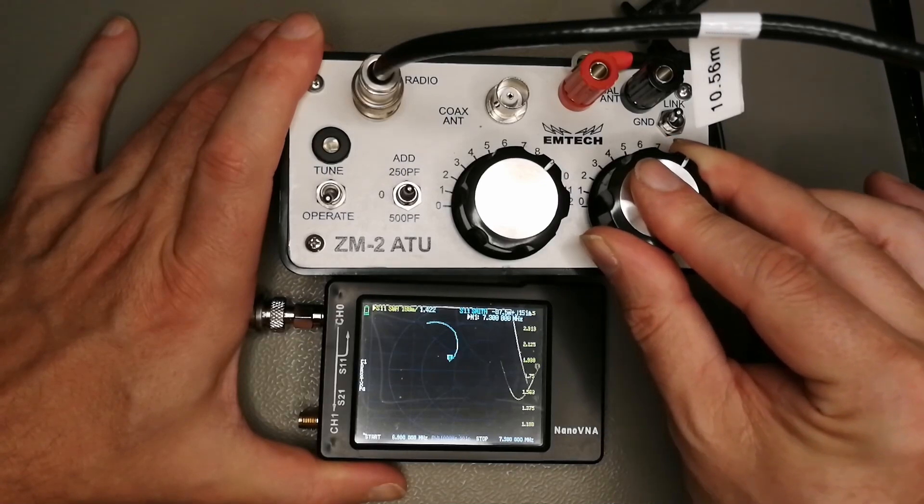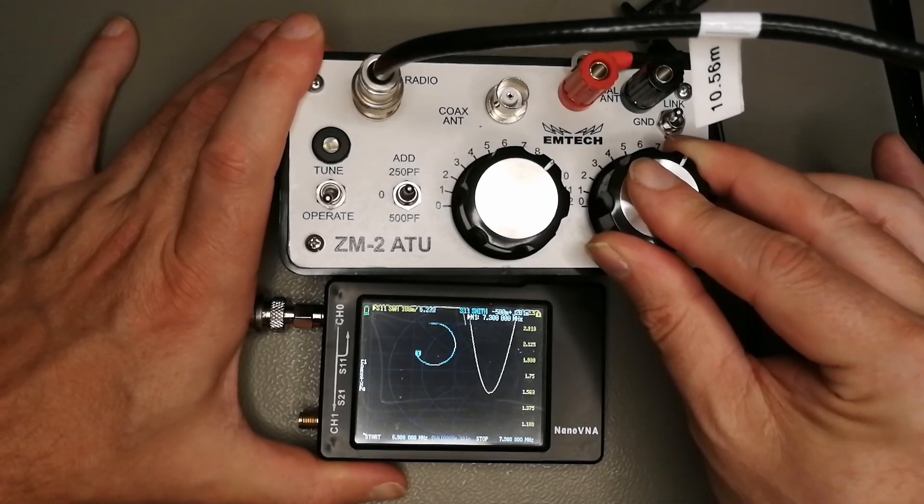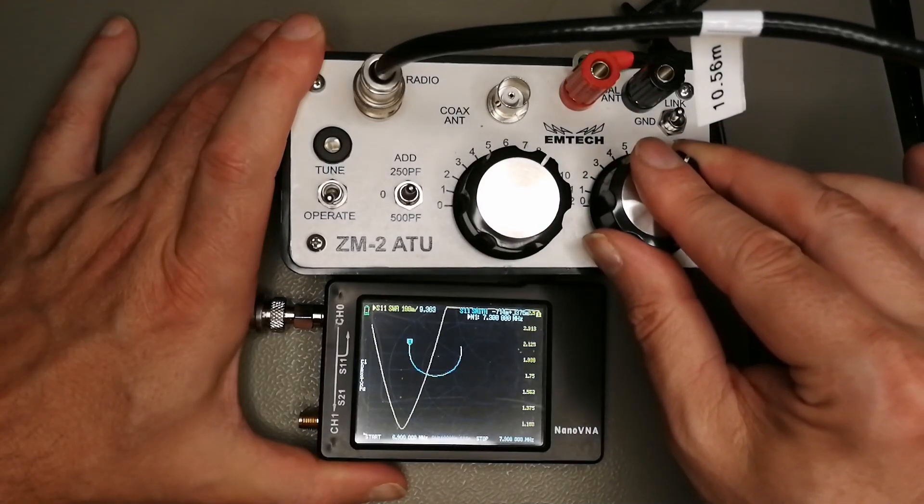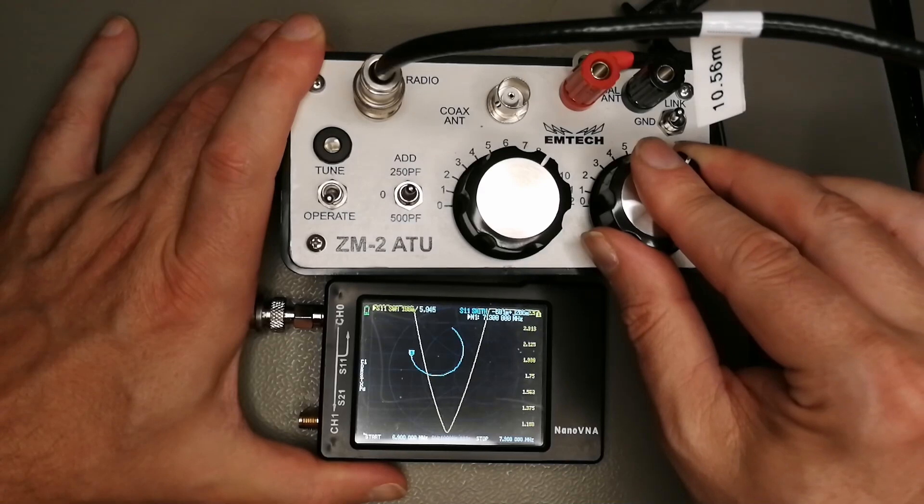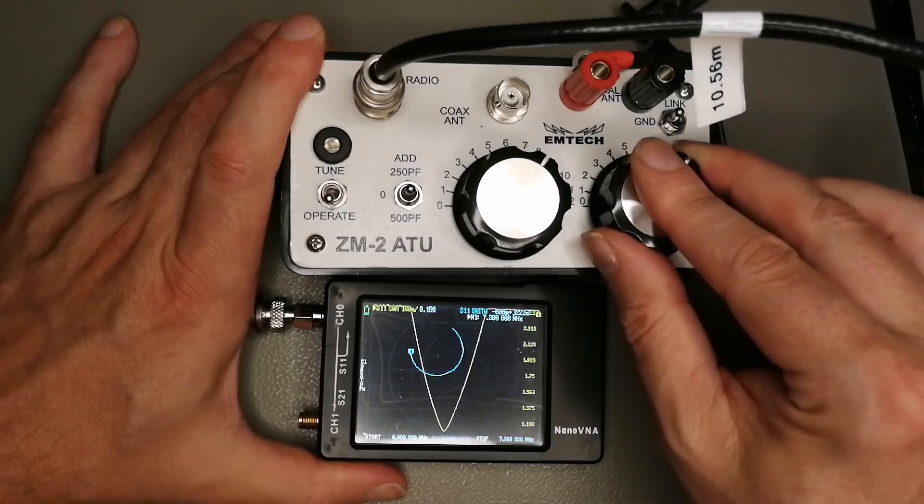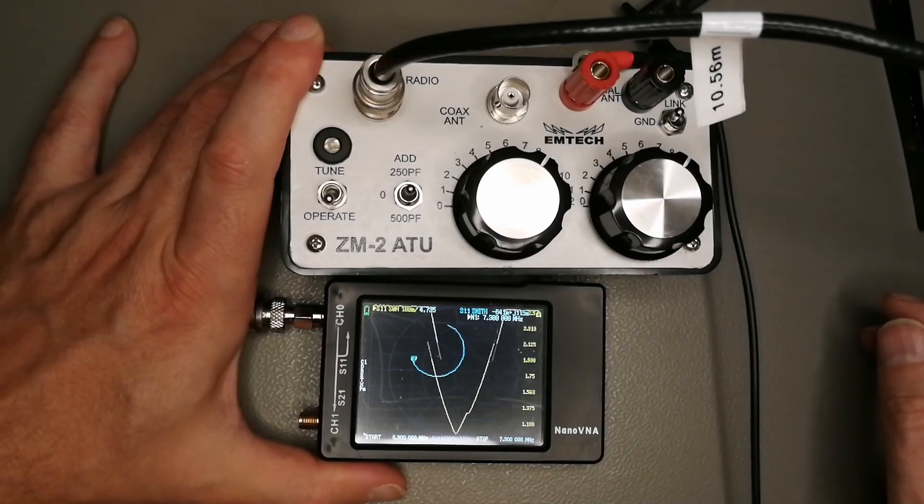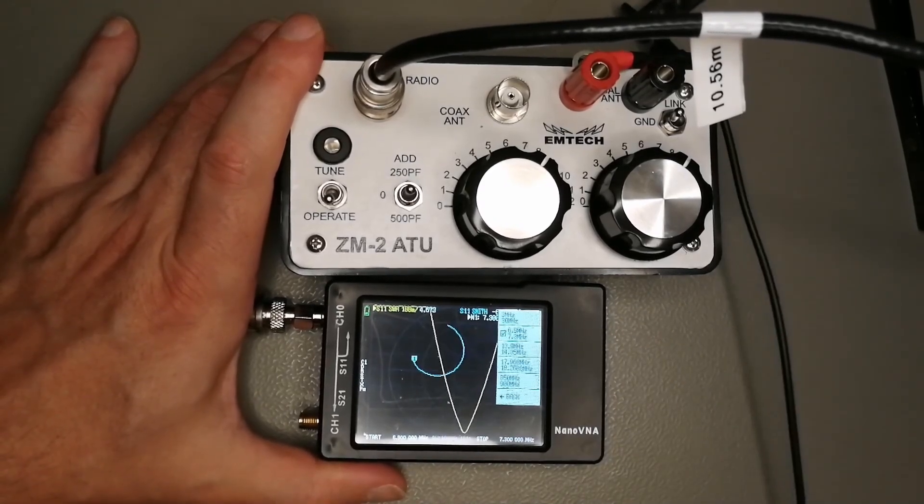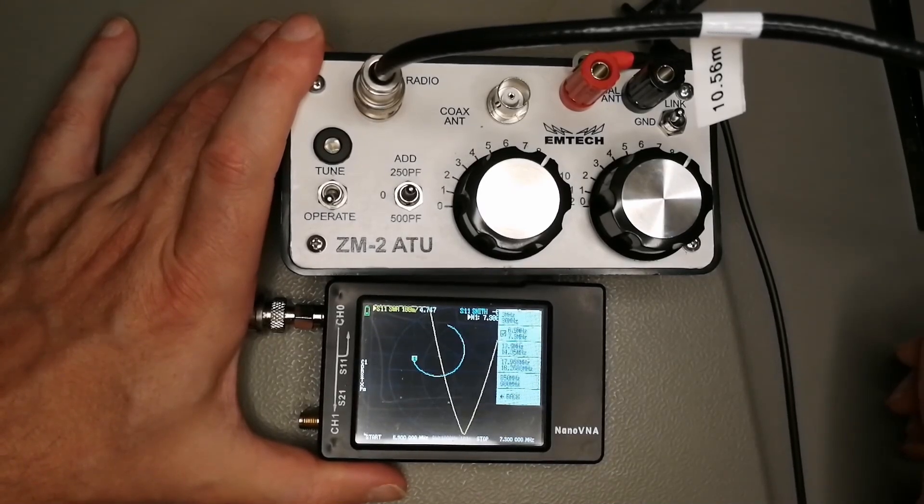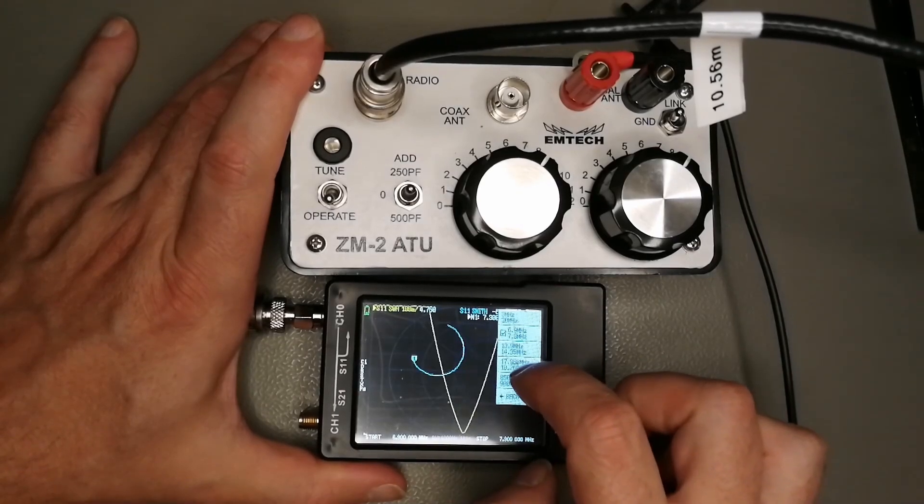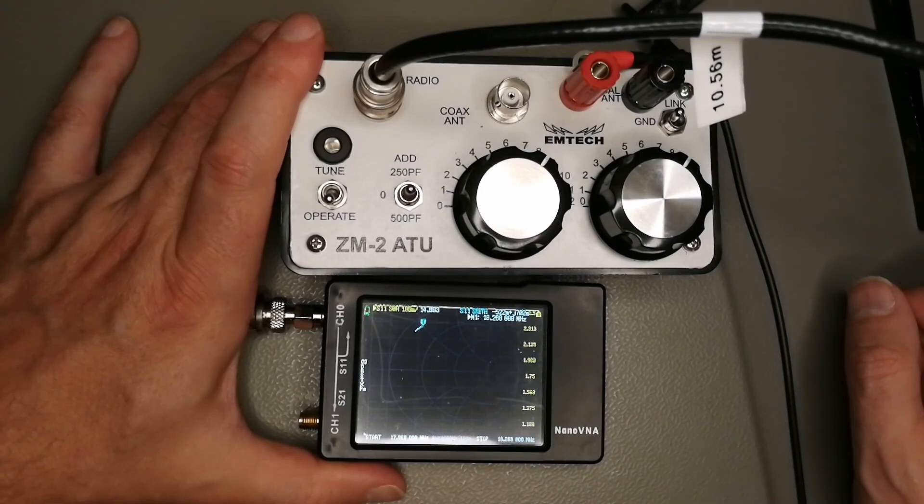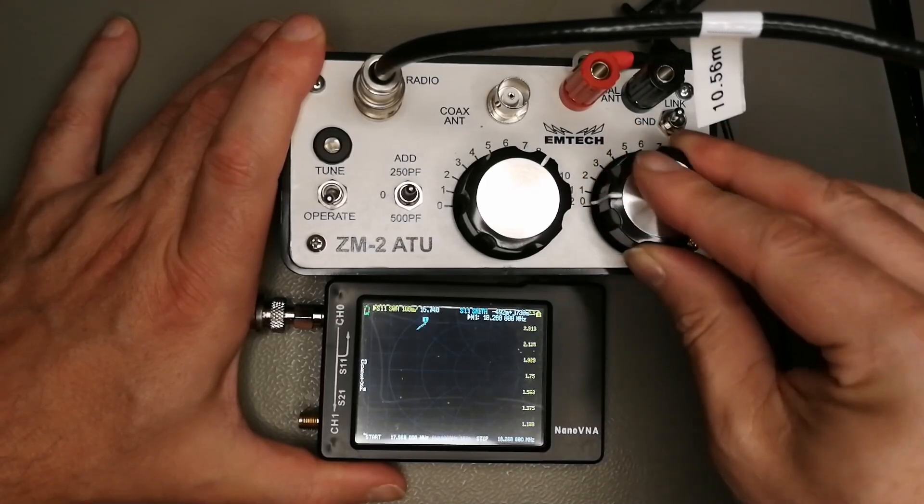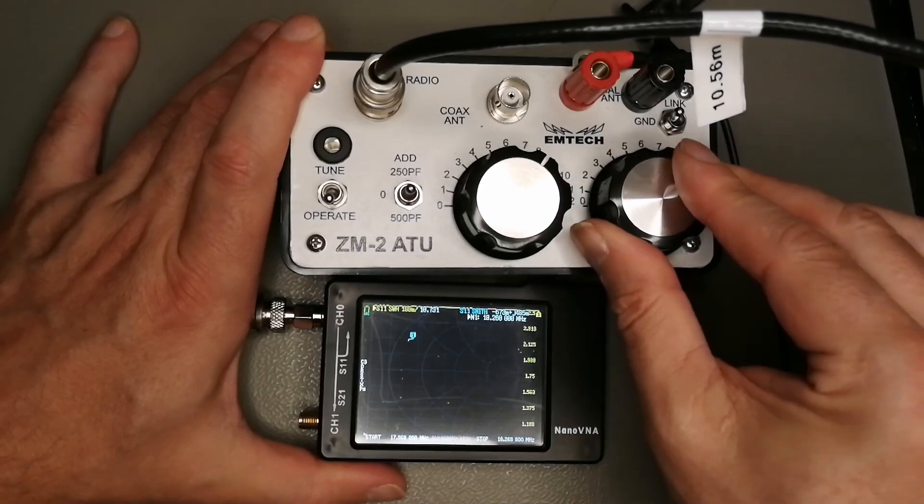We are here on the 40 meter band, start frequency 6.9 megahertz, stop frequency 7.3. In theory, as you can see, the dip is wandering here from left to right as I turn the variable capacitor. If I tweak here, I can get it really down to SWR of 1 to 1. It's pretty sharp, almost as sharp as a magnetic loop, at least on 40 meter band.